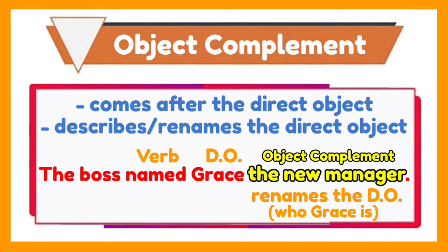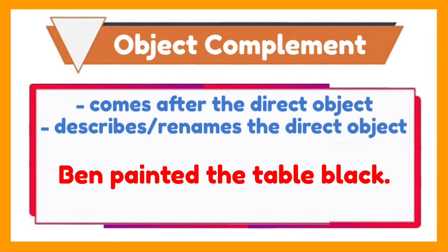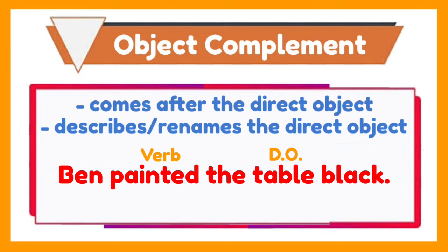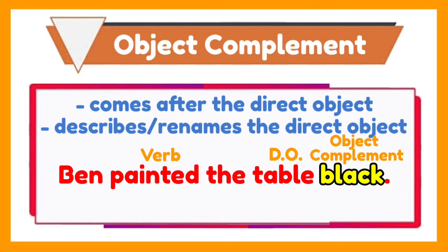Another example: Ben painted the table black. The direct object is table — it tells what Ben painted. The object complement here is black, because it describes the direct object which is table.